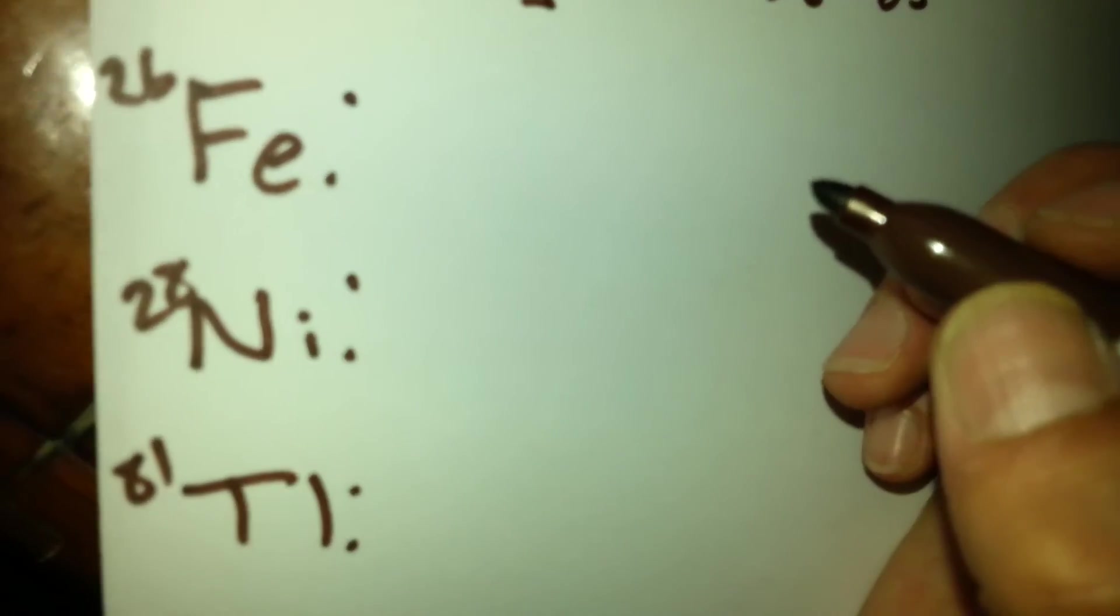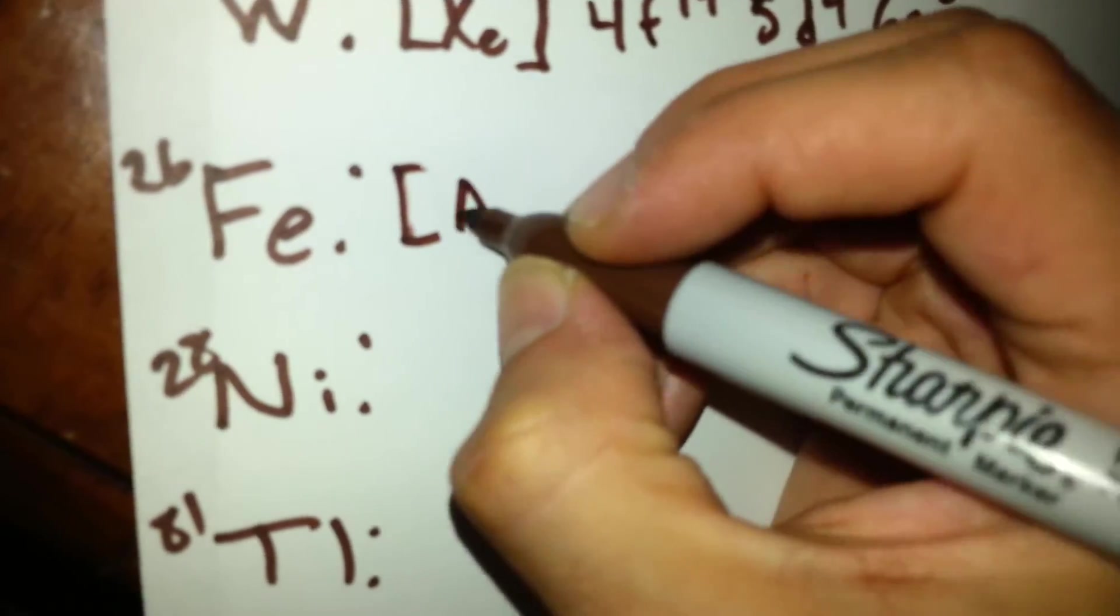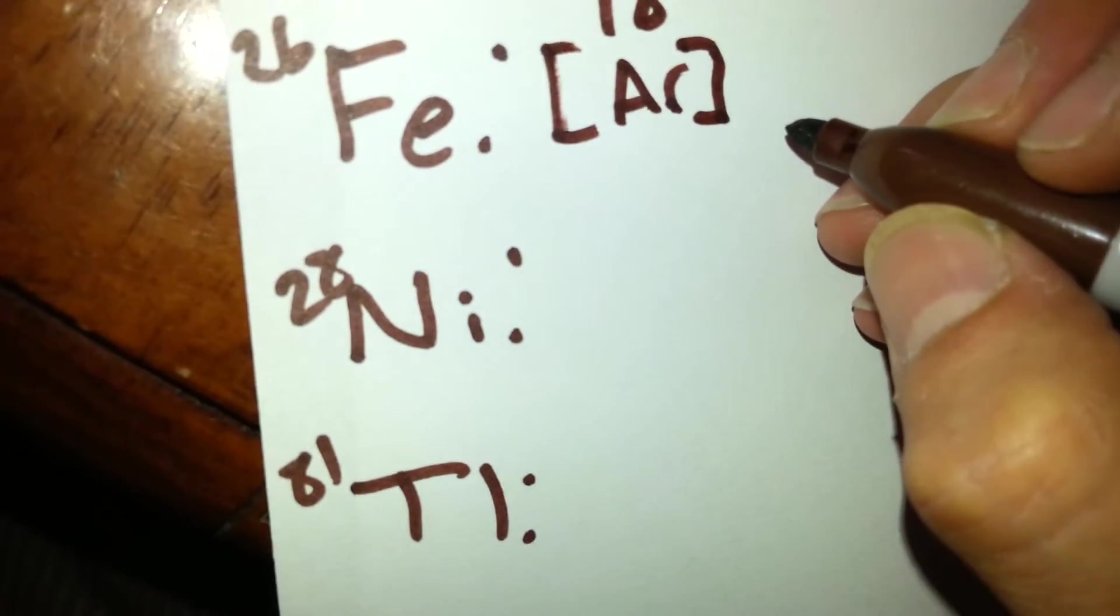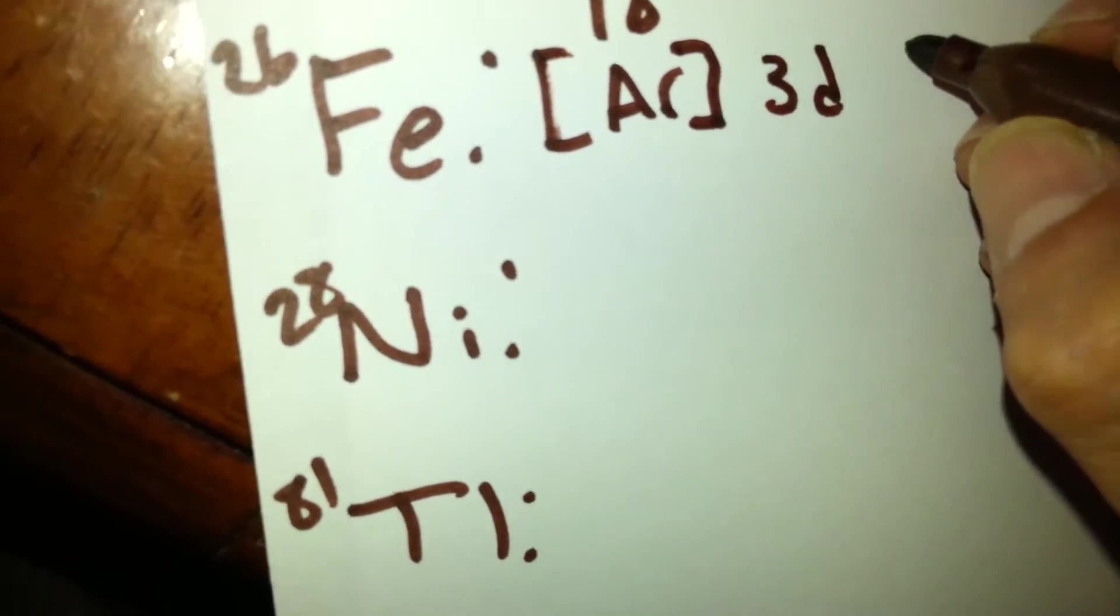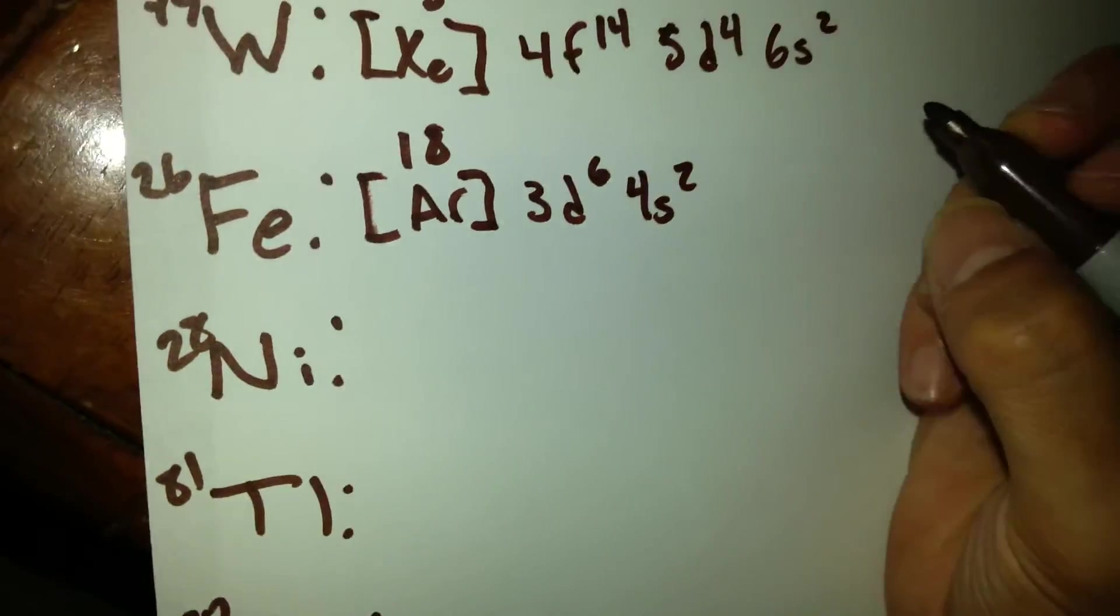The next one is iron. For iron, we are going to utilize argon again, which has a total of 18. After that, we have the 3d orbital full with 6, and the 4s orbital with 2,